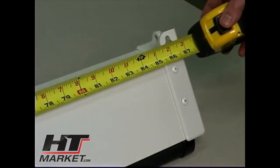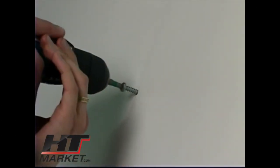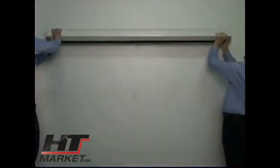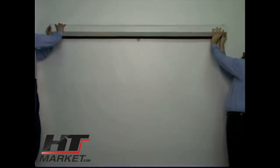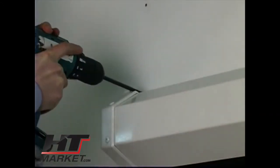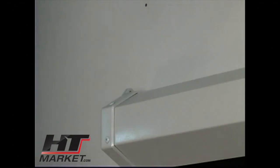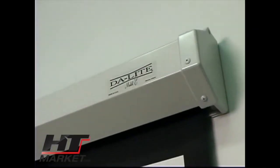Measure the distance between the mounting points of your screen case and pre-install appropriate fasteners for your wall type. Carefully lift the screen case and hang it from the wall using the fasteners. Tighten the fasteners to secure the screen case to your wall and make sure that the screen is level. The Model C is now ready for operation.